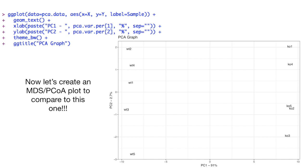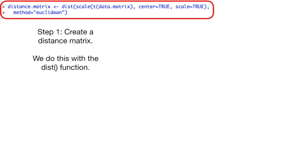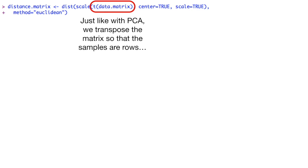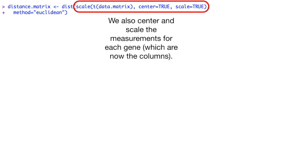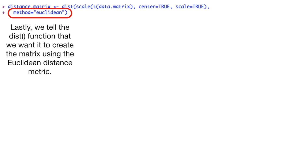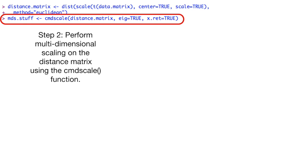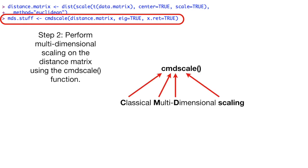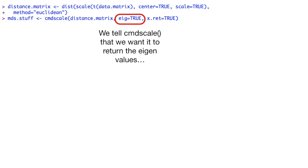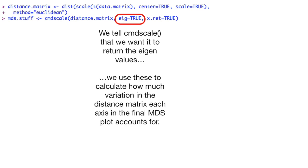Now let's create an MDS or PCoA plot to compare to this one. Step 1: create a distance matrix. We do this with the dist function. Just like with PCA, we transpose the matrix so the samples are rows. We also center and scale the measurements for each gene, which are now the columns. Lastly, we tell the dist function that we want to create the matrix using the Euclidean distance metric. Note, the dist function has six different distance metrics to choose from. Step 2: perform multi-dimensional scaling on the distance matrix using the cmdscale function. cmdscale stands for classical multi-dimensional scaling. We tell cmdscale that we want it to return the eigenvalues. We use these to calculate how much variation in the distance matrix each axis in the final MDS plot accounts for.